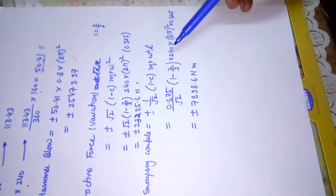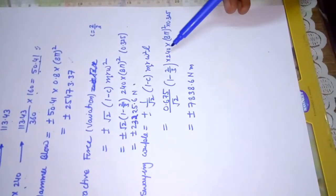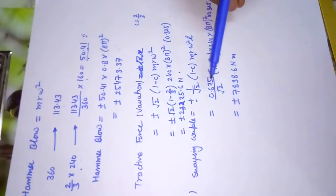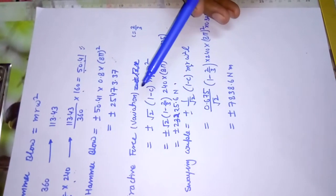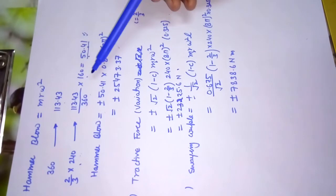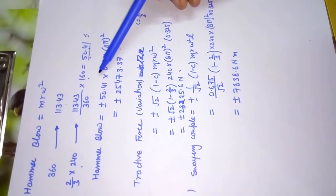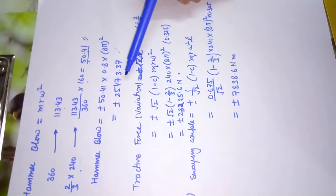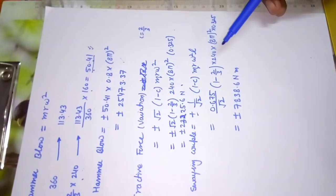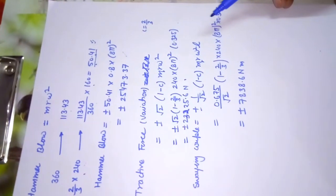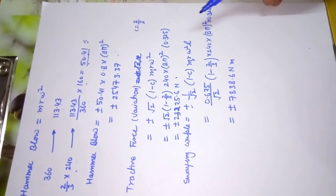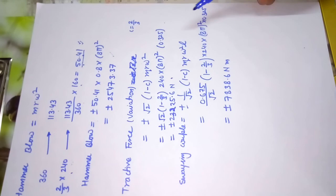For an uncoupled locomotive, we can determine hammer blow, tractive force, and swing couple in this manner. It is important to remember that hammer blow uses the unitary method to find the effective reciprocating balancing mass m. This completes the uncoupled locomotive problem. In the next lecture, we will solve the coupled locomotive problem, which involves two additional planes.